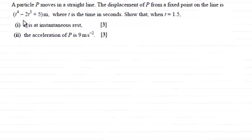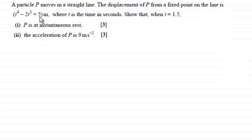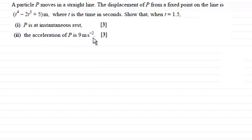Hi. In this question we're told that a particle p moves in a straight line and the displacement of p from a fixed point on the line is t to the power 4 minus 2t cubed plus 5 meters, where t is the time in seconds. Show that when t equals 1.5, in part one p is at instantaneous rest, and in part two the acceleration of p is 9 meters per second per second.